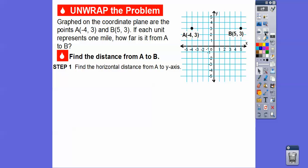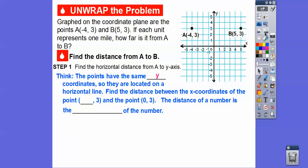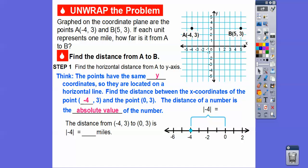We're going to find the distance from A to B — specifically the horizontal distance from A to the y-axis. The points have the same y-coordinate, so they're located on that horizontal line. Find the distance between the x-coordinate of point negative 4, 3 and the point 0, 3. The distance on the number line is the absolute value of the number. Absolute value is always positive and distance is always positive. So the distance from negative 4, 3 to 0, 3 is the absolute value of negative 4, which is 4.